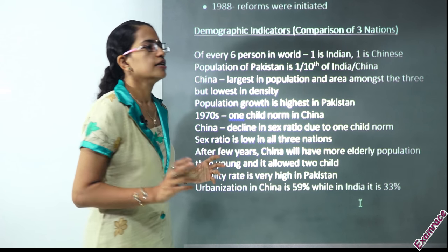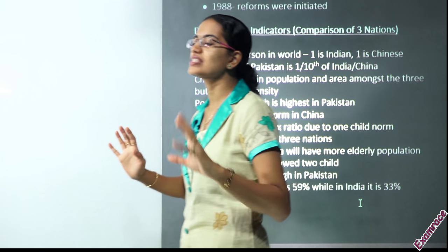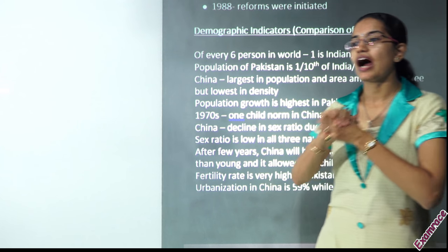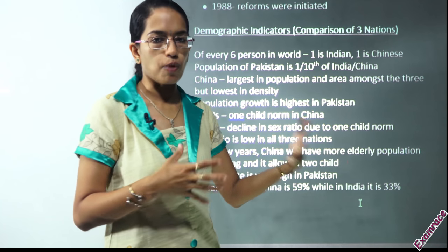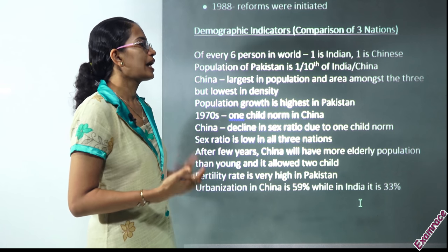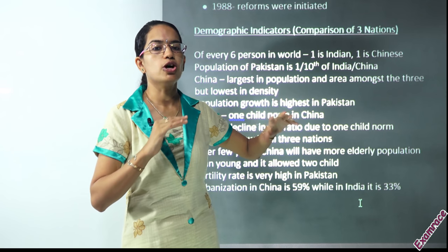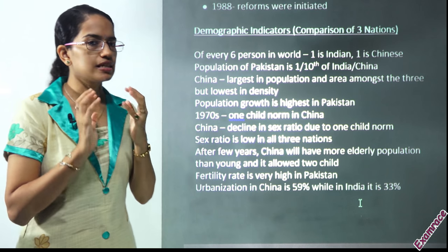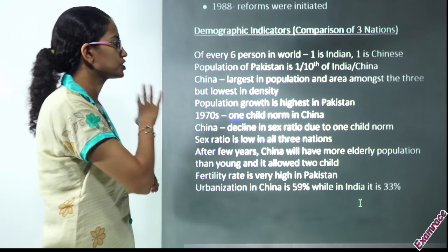Regarding demographic indicators, of every six persons in the world, one is Indian and one is Chinese — making India and China the leading countries in terms of population. Compared to Pakistan, only one-tenth of India's population resides in Pakistan. China leads, India is second-largest, and Pakistan is just one-tenth of India. The study becomes challenging because India and China have huge populations to manage. Population growth is registered highest for Pakistan and lowest for China.